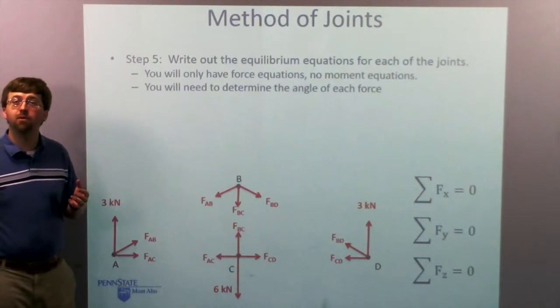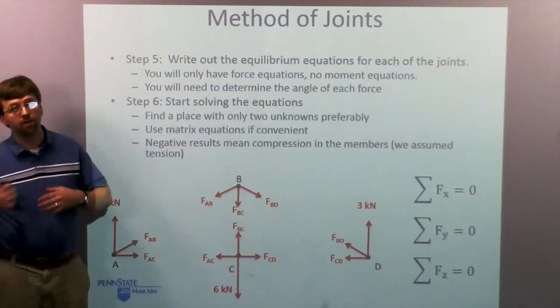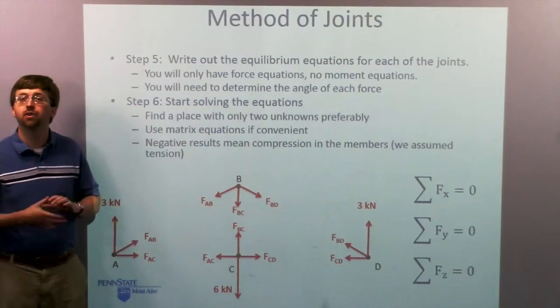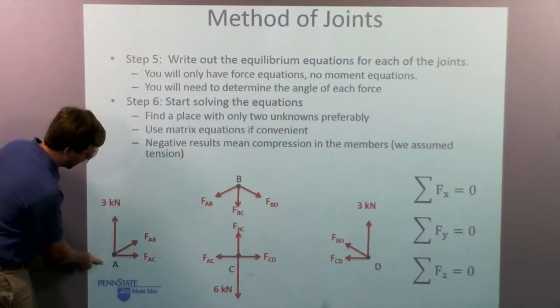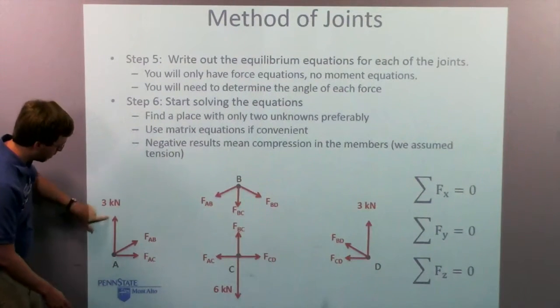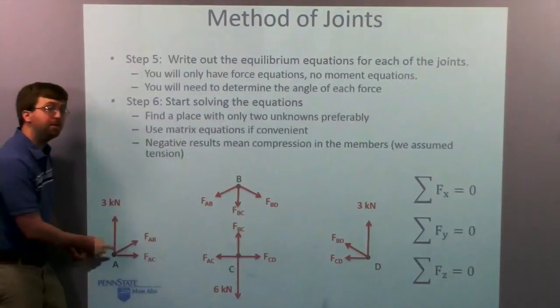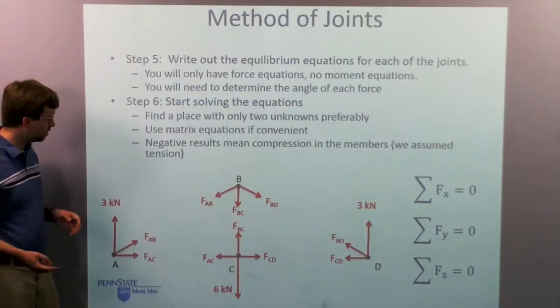So once I have all my equations, I've got these eight equations I can use, time to start solving the equations. So find a place with only two unknowns, preferably to start. So if I start over here at A, I've got some forces in the Y, some forces in the X, and then FAC and FAB are my two unknowns. I should be able to solve those two equations for those two unknowns.